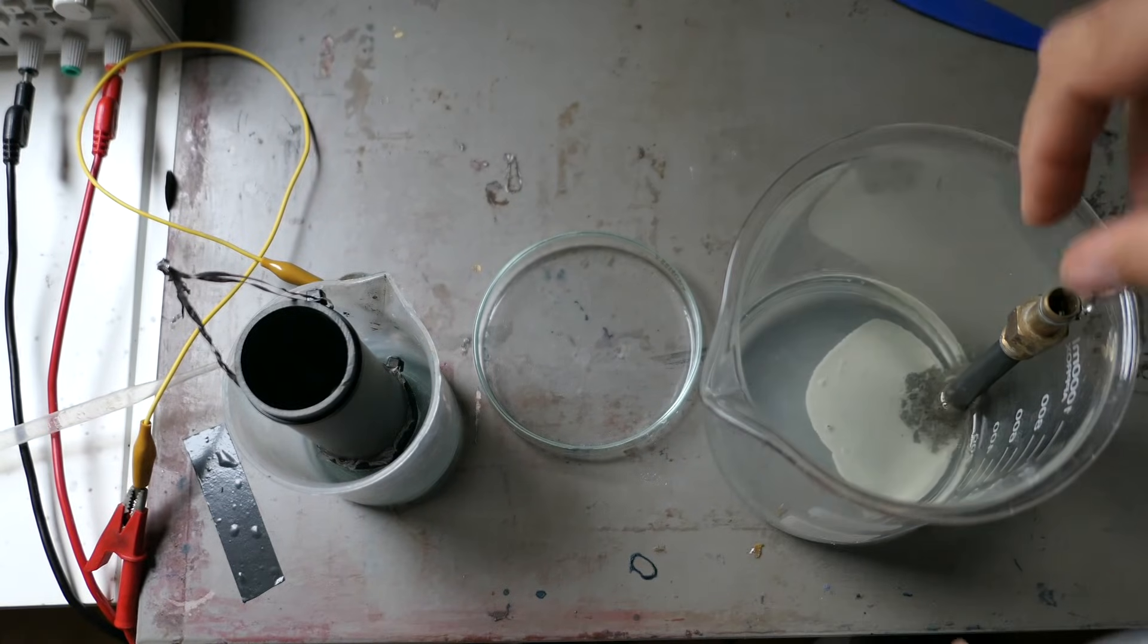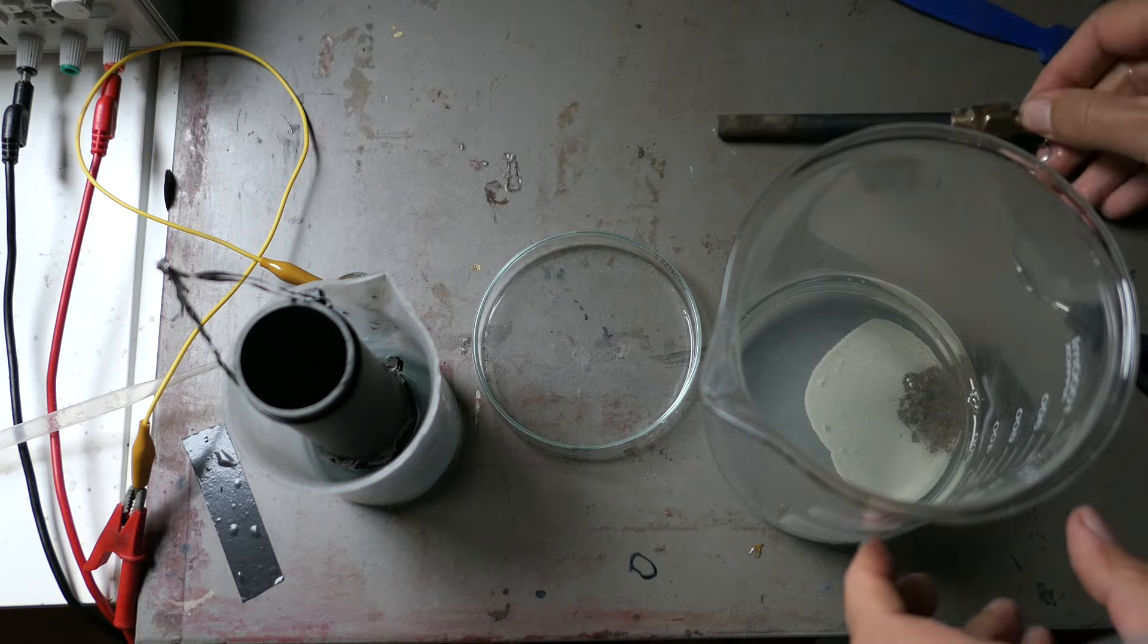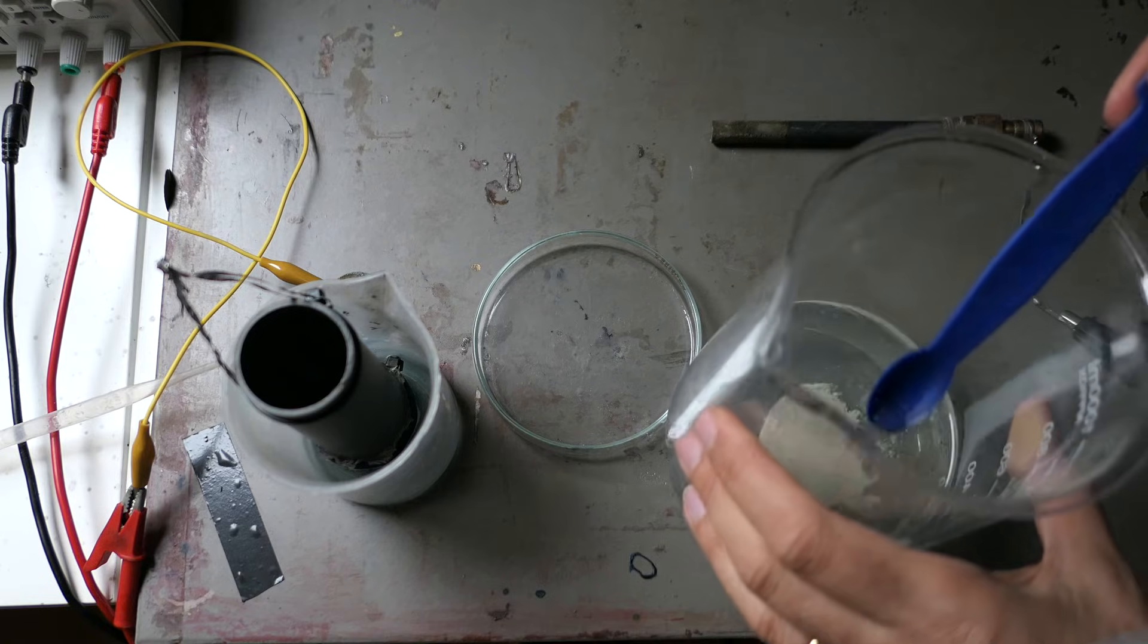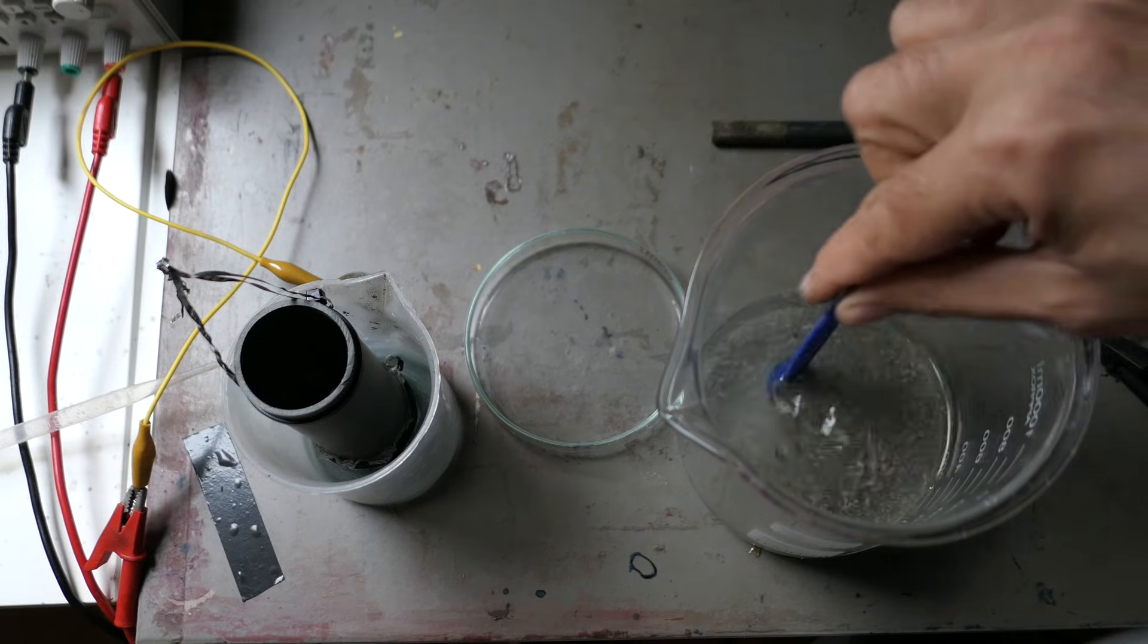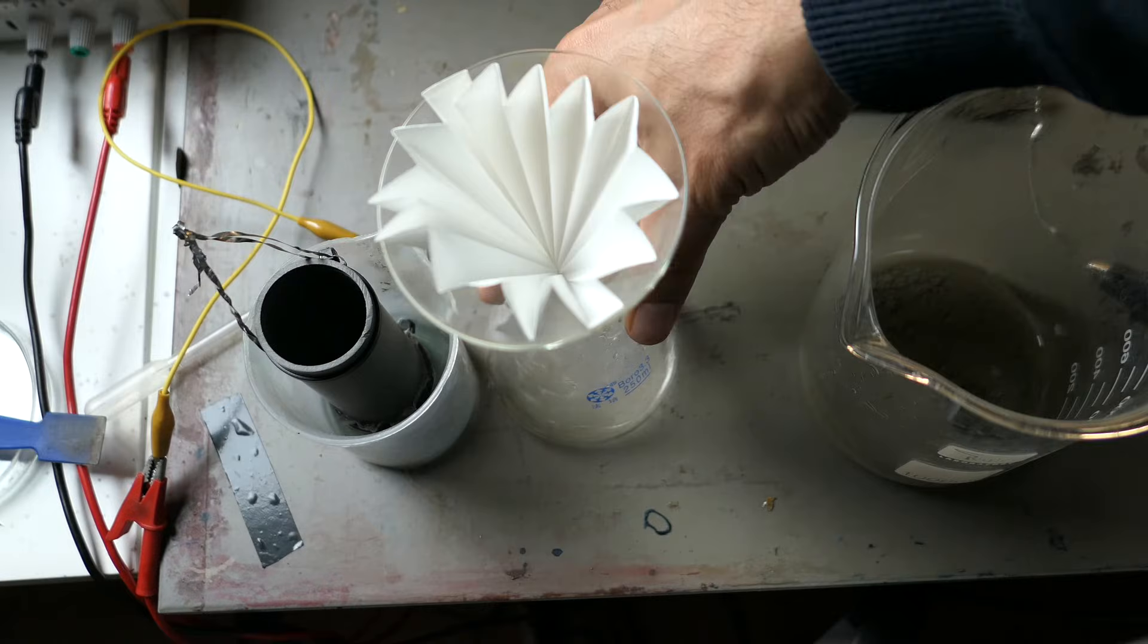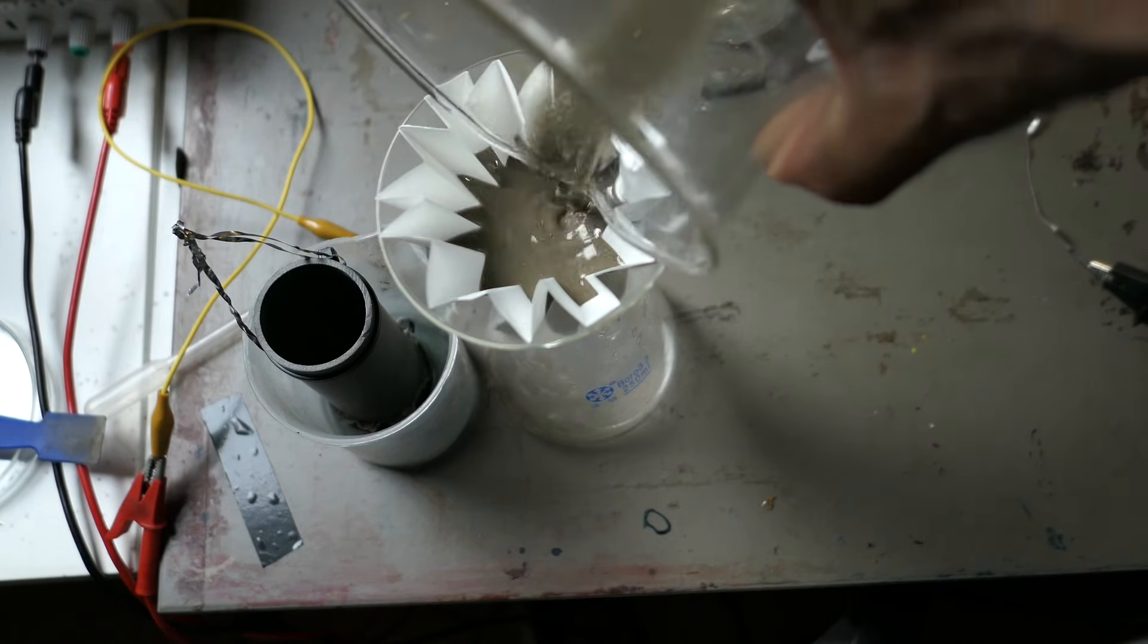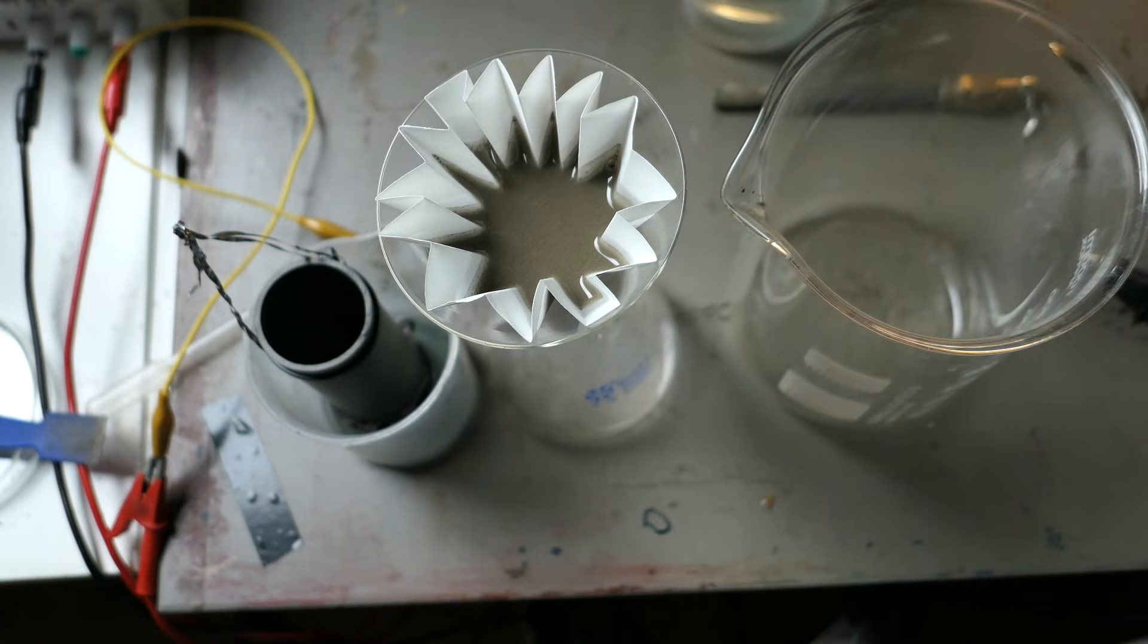Once we're done with the electrolysis, it's time to harvest the pure silver. The deposit on the cathode is collected, but before we can use it, we need to clean it up. To do that, I'm going to filter the silver deposit using a funnel and a filter paper. This step is important because we want to rinse the silver thoroughly, washing away any remaining traces of sulfamic acid or other salts that may have formed during the process. After rinsing the silver several times to ensure it's clean, we can let it dry. Once dried, we're left with pure, refined silver that's ready for further use.